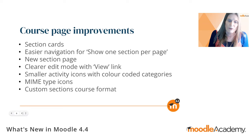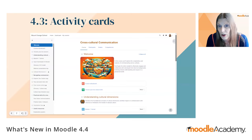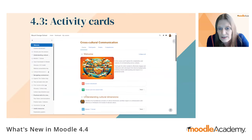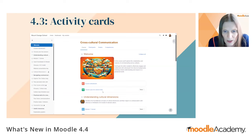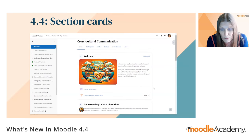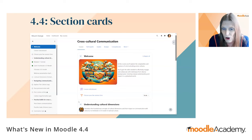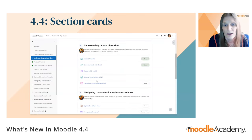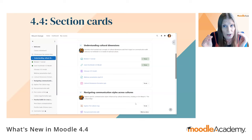Here we have a course, Cross-Cultural Communication, in Moodle 4.3. Each activity is encased in a card — for example, a card for the course notice board, for the choice, and so on — and sections are divided by a line. In Moodle 4.4, this is reversed: activities are separated by lines and course sections have a card around them. Scrolling down, you can see sections like 'Understanding Cultural Dimensions' and 'Navigating Communication Styles' displayed in cards for easier focus.